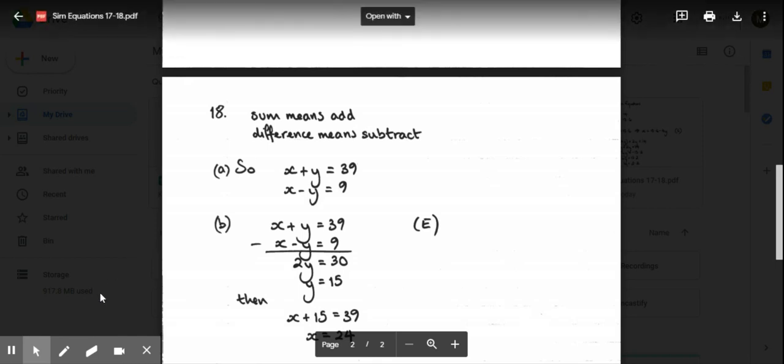You need to remember that sum means to add and difference means to subtract. So what looks like a pretty awkward question with not much information actually has quite a bit. The sum means x + y must equal 39, and the difference x - y equals 9. Then we use those two equations.